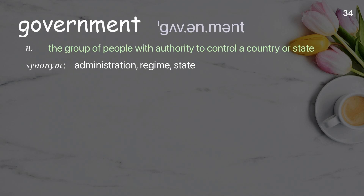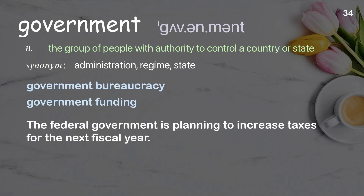Government: the group of people with authority to control a country or state. Examples: government bureaucracy; government funding. The federal government is planning to increase taxes for the next fiscal year.